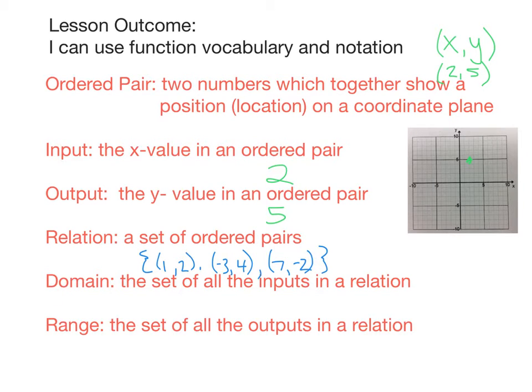Now domain and range are two connected words. The domain is the set of all the inputs in a relation, and the range is the set of outputs in a relation. So we just talked about in this point up here, 2, 5, that our input is 2 and our output is 5.